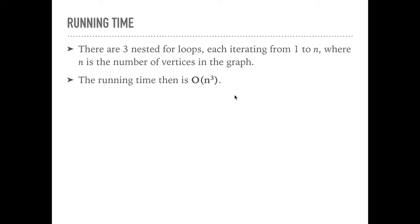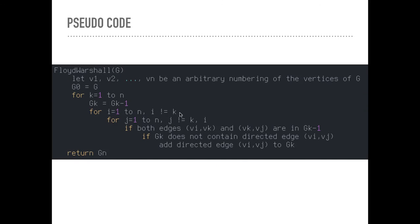The running time is pretty easy. There are three nested for loops iterating from 1 to n, where n is the number of vertices. So the running time is order n cubed, as you can see here.